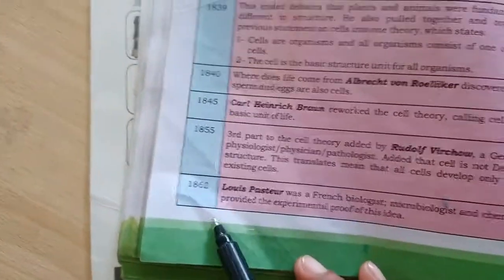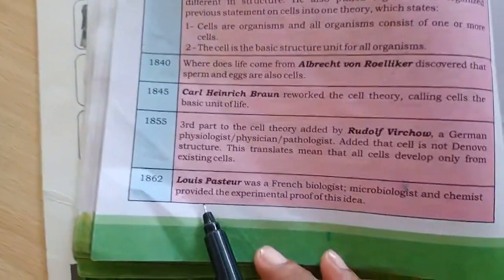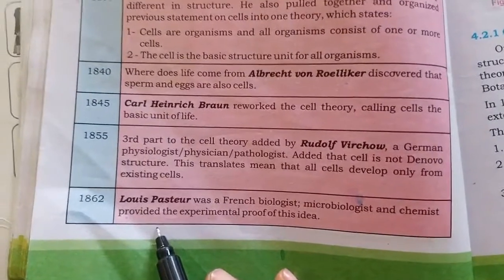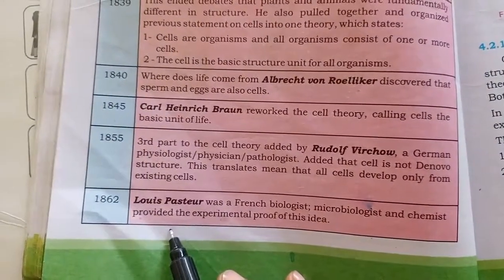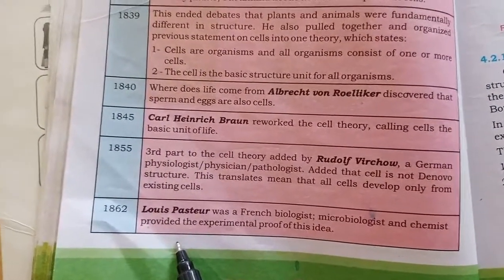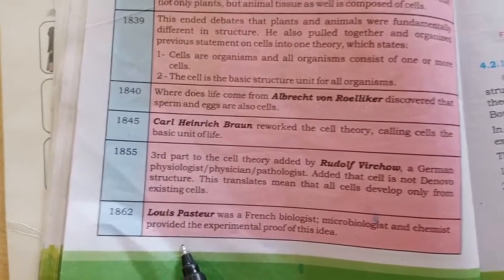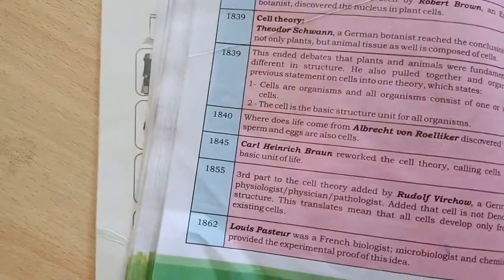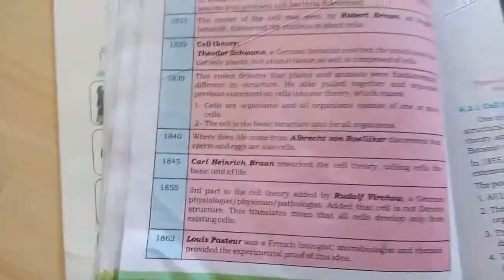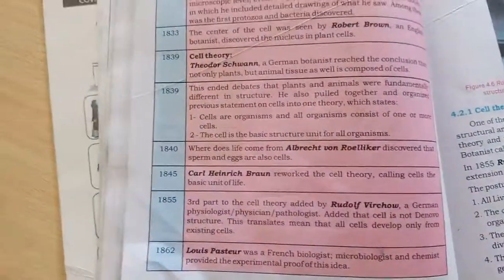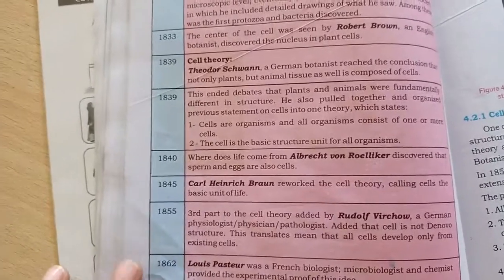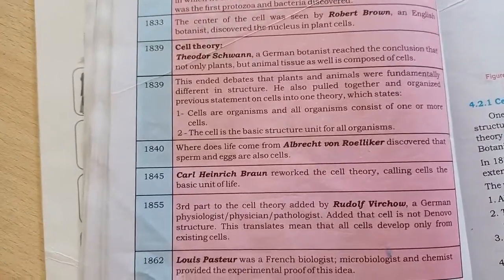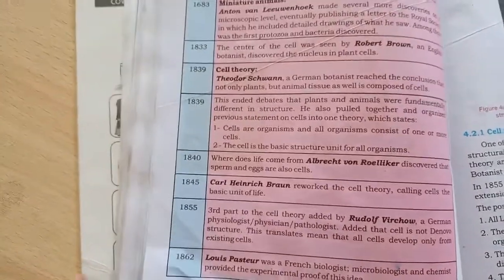The last point is from 1862 — Louis Pasteur, a famous microbiologist and chemist, through his experiments proved cell theory, establishing that all unicellular and multicellular organisms are made up of cells.